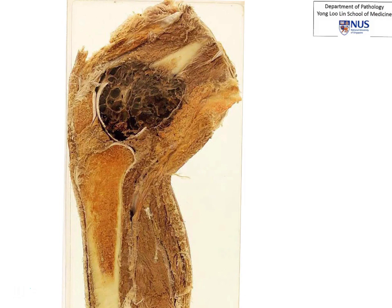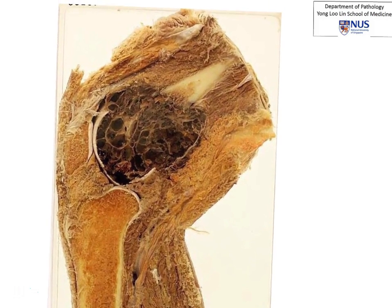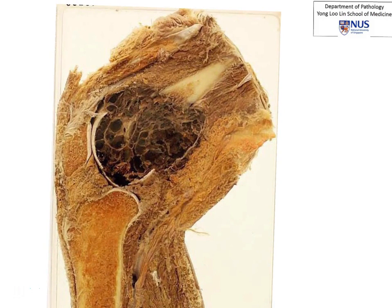The obvious abnormality is located in the distal femur. It is just abutting on the articular surface here, so it would be involving the epiphyseal as well as the metaphyseal region of the bone. In addition to that, it appears to be quite expansile. It is quite broad, and it even breaks through the cortex of the bone, as can be seen over here.